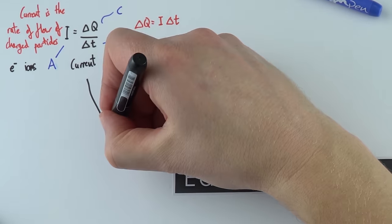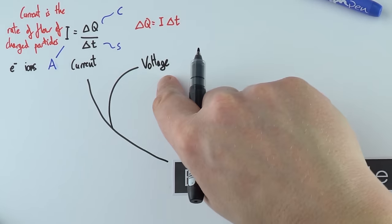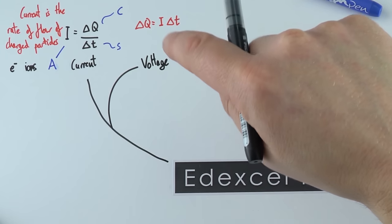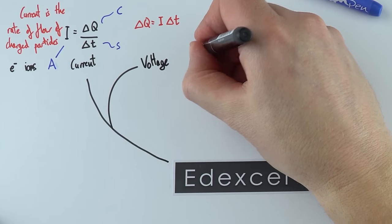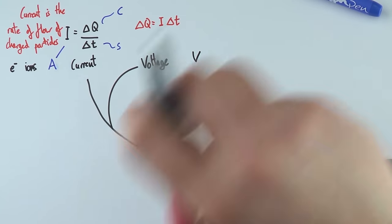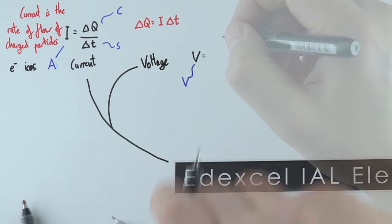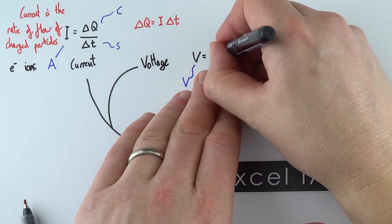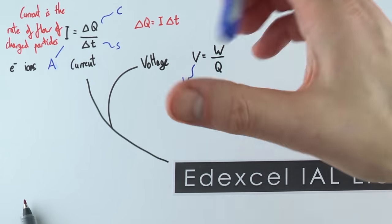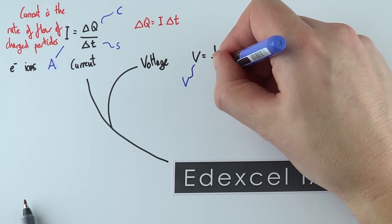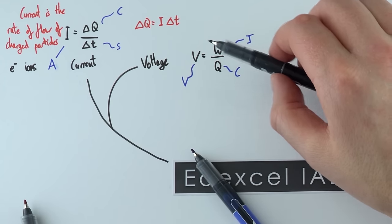Something else which is really important in a circuit is voltage. I'm going to call it voltage at the moment — later on we'll look at EMF and potential difference. We represent voltage with a capital V, which is also the unit volts. Voltage is really the energy transferred — W for work — over the charge transferred. So we've got work or energy in joules and charge in coulombs. Voltage is the energy per unit charge.